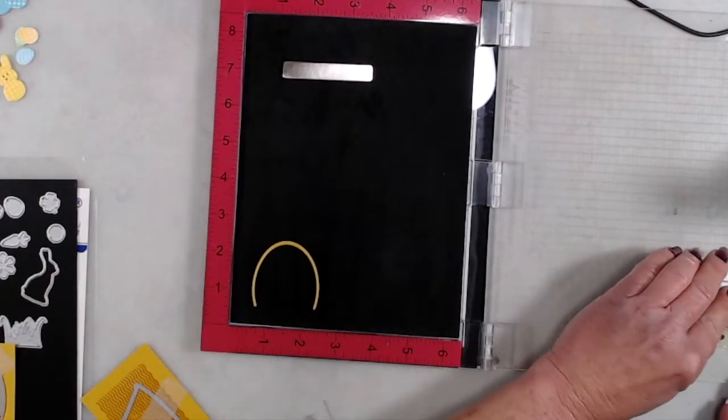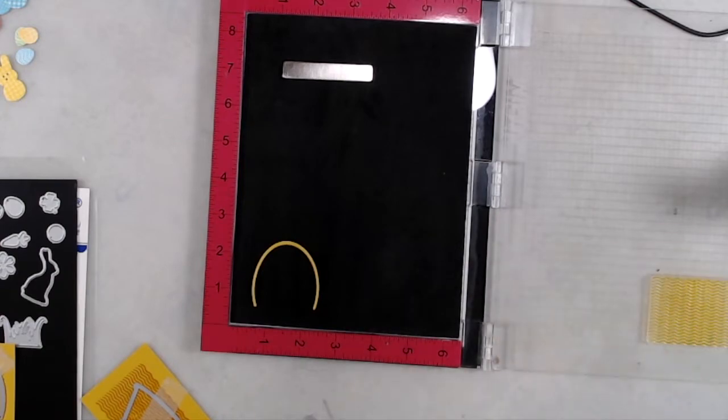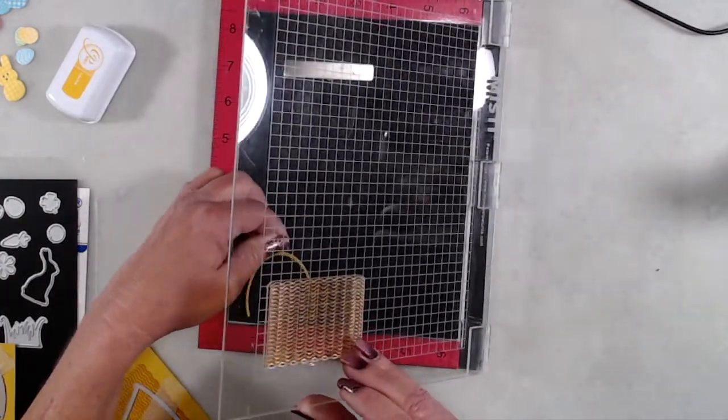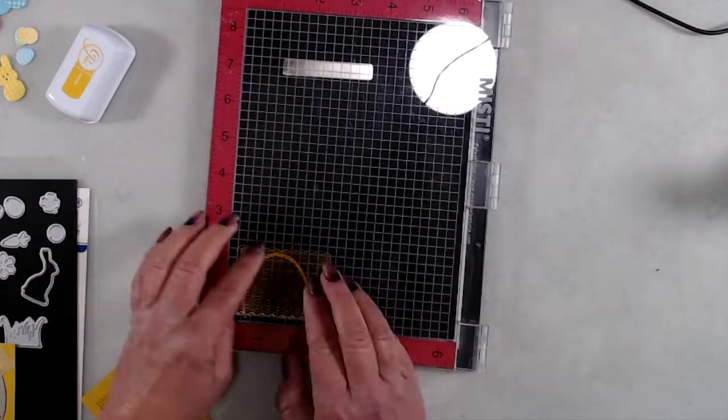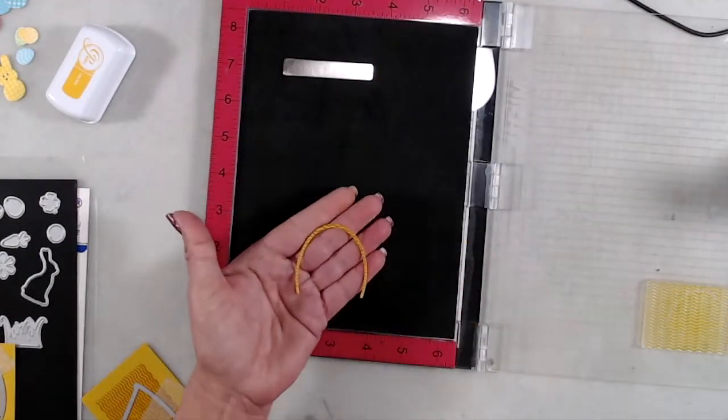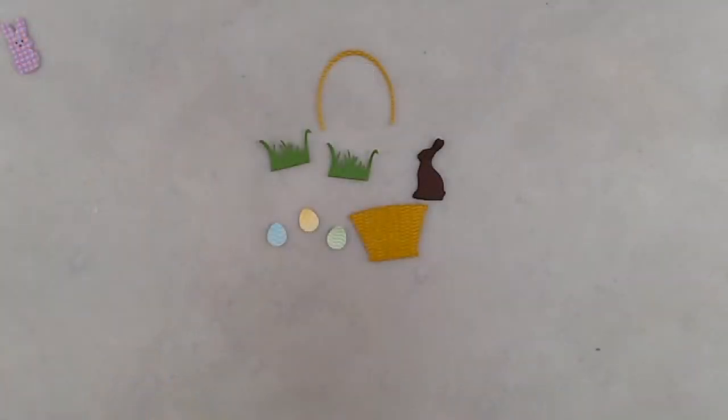After I had die cut the handle, I thought that needed some texture as well, so I just placed that in my MISTI and stamped right on top of the handle using the same wavy line micro pattern stamp.